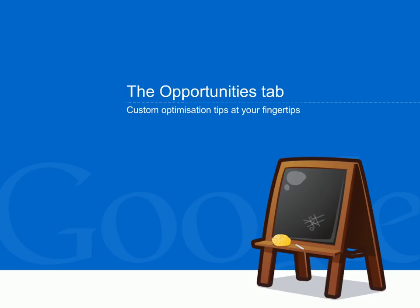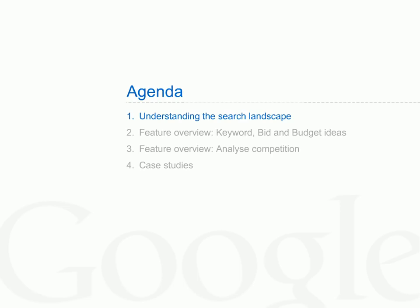I'm going to talk to you about the Opportunities Tab, your new homepage for account optimization. In this presentation we'll talk about the search landscape and why we created the Opportunities Tab, the benefits of its three main features — keyword, bid and budget ideas — how to use it to analyze your competition, and some interesting case studies from businesses that have used the Opportunities Tab.